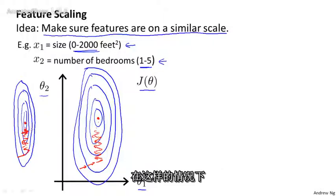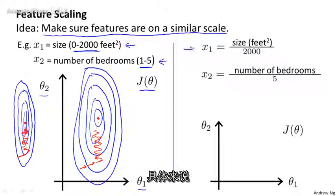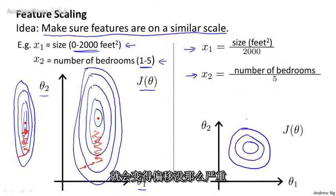In these settings, a useful thing to do is to scale the features. Concretely, if you instead define the feature x1 to be the size of the house divided by 2,000, and define x2 to be the number of bedrooms divided by 5, then the contours of the cost function can become much less skewed, so the contours may look more like circles.